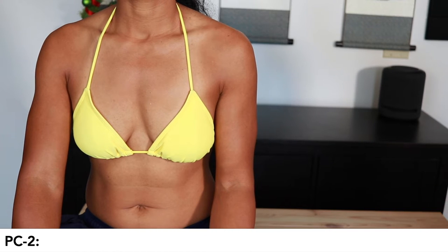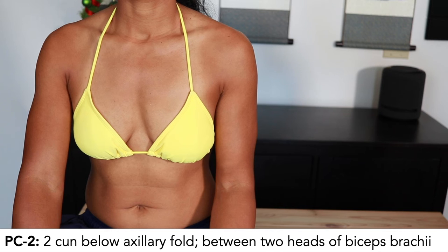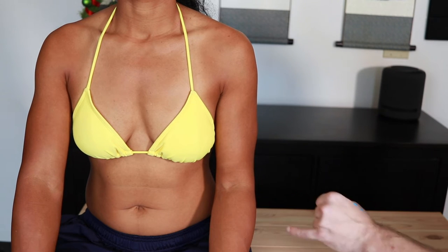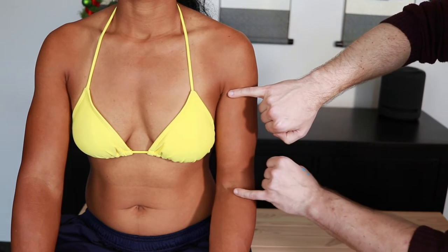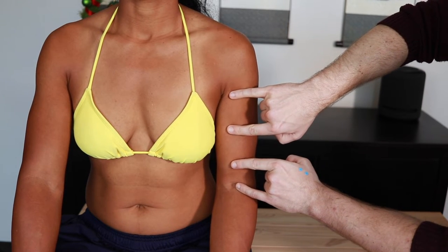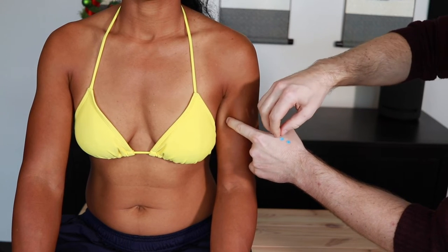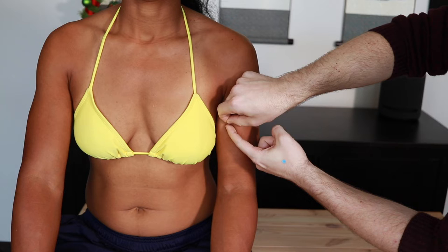After that, we're on the arm. Pericardium 2 is 2 cun below the axillary fold between the two heads of the bicep brachii muscle. So we have axillary fold to transverse cubital crease is 9 cun. We can divide it into thirds to get 3 cun. And then we want 2 cun for pericardium 2.